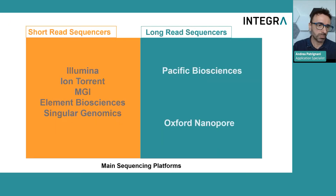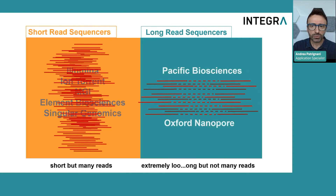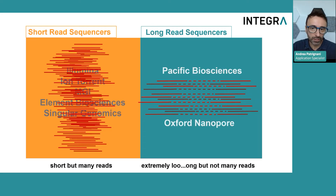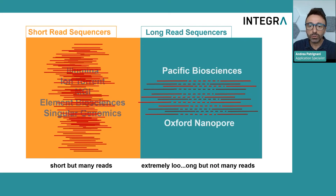Currently, there are seven main players in the NGS market. Short read sequencers like Illumina or MGI specialize in producing short reads with very high throughput. On the other hand, long read sequencing technologies such as PacBio or Oxford Nanopore typically generate fewer reads, but of extremely long length. While long read sequencers are innovative and powerful, they do not completely substitute short read sequencers. Instead, they often complement each other, supporting a wide range of applications.